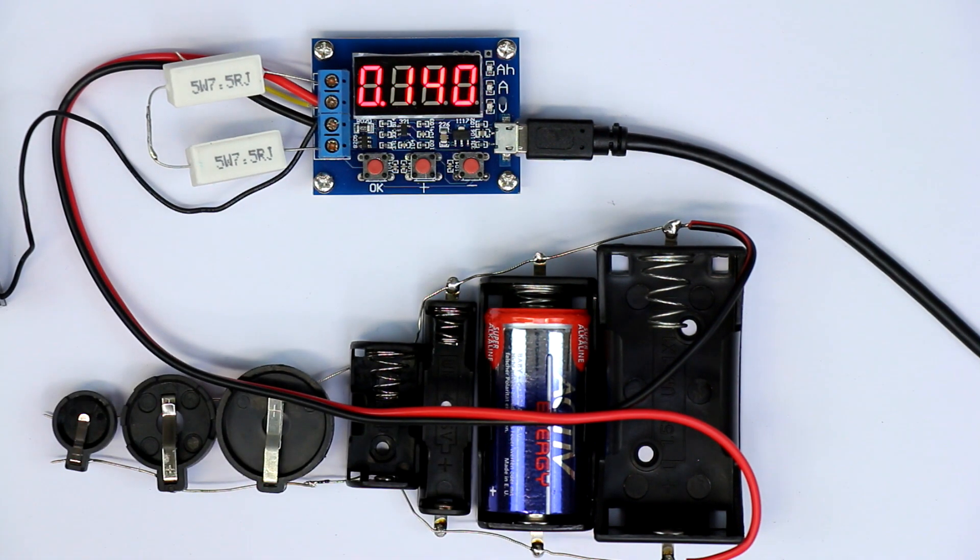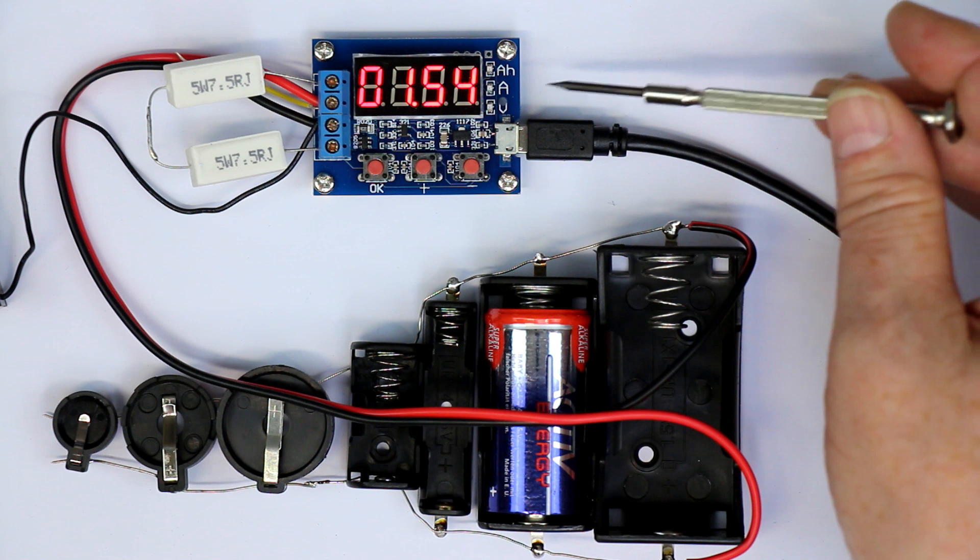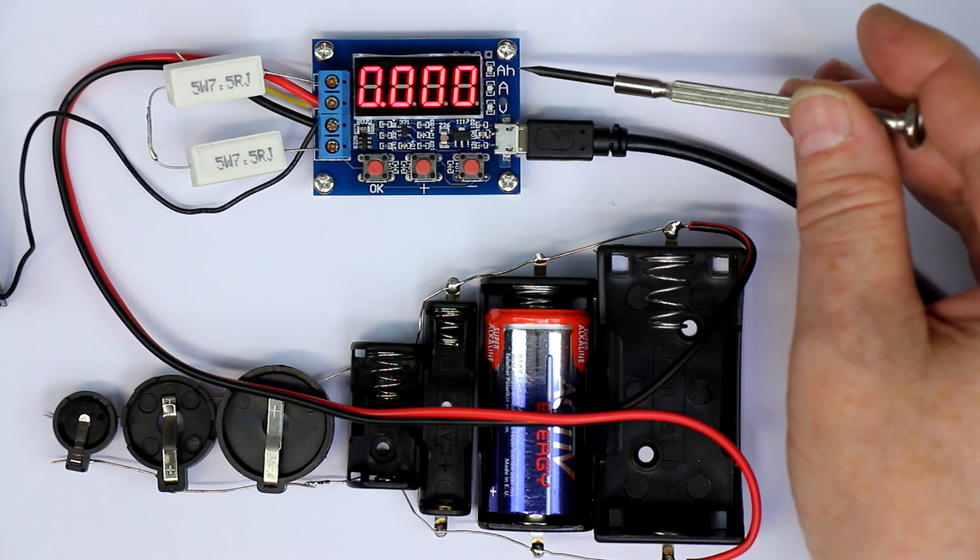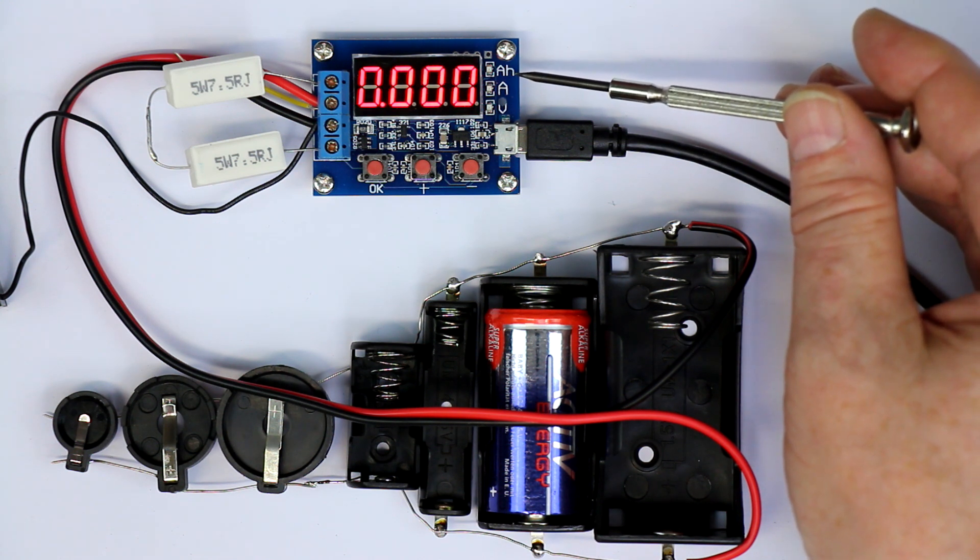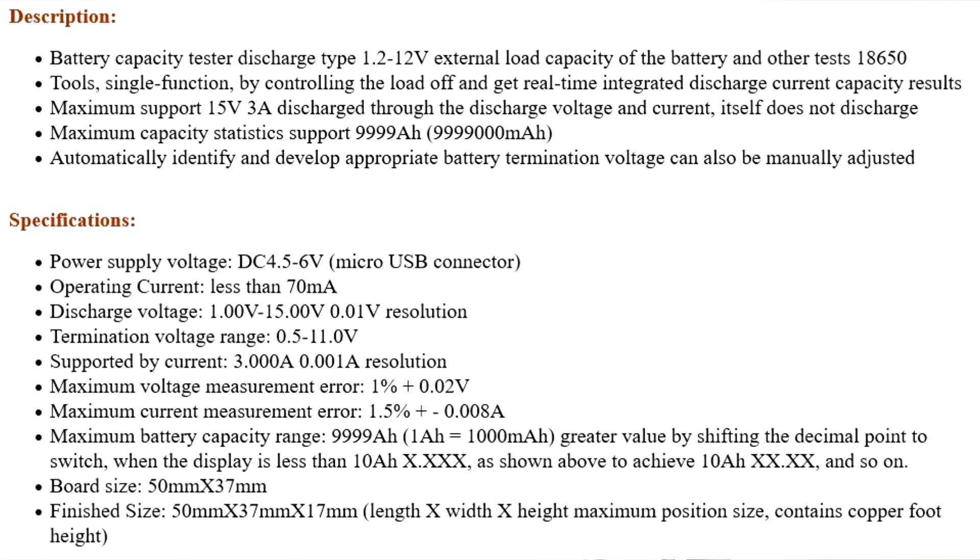Then it cyclically displays the measured amps, the measured voltage, and the accumulated amp hour or milliamp hour. It can measure up to I think 1000 amp hours. The limitations are the maximum input voltage is 12 volts, but I think 15 volts for a fully charged lead acid or lithium cell is still OK. The maximum current is 3 amps that it can measure.